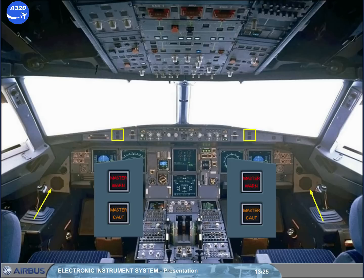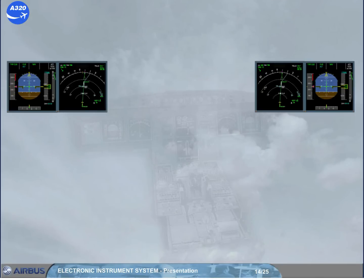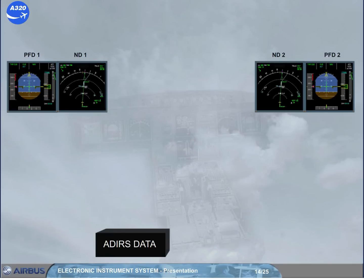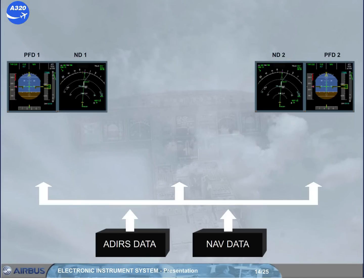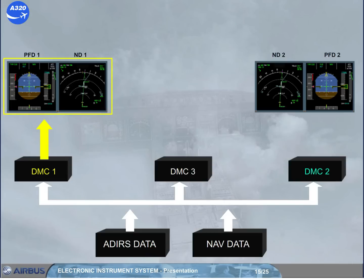Note, the loudspeakers can also be used to listen to ATC and the intercom. Now let's go back to the EFIS system. For the EFIS displays, data from the air data and inertial reference system, ADIRS, plus navigation data from the flight management and guidance system, FMGS, supply directly the three display management computers, DMCs. The three identical DMCs process the data and generate the images to be displayed. In normal operation, DMC-1 supplies EFIS information to the captain's PFD and ND, DMC-2 supplies the first officer's PFD and ND, and DMC-3 is available as a backup.